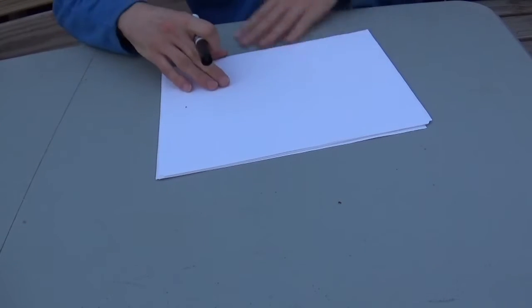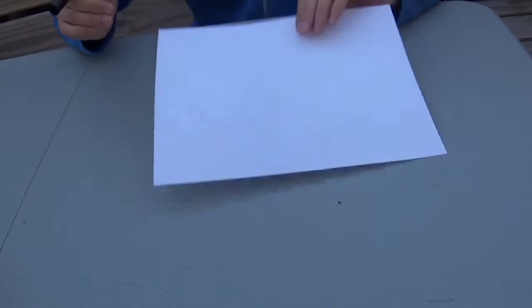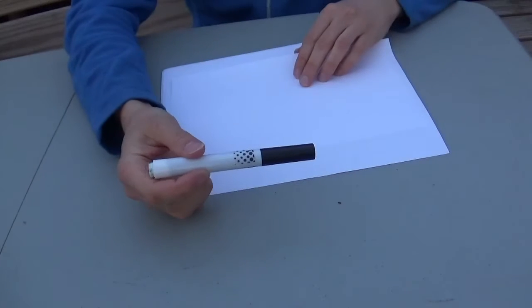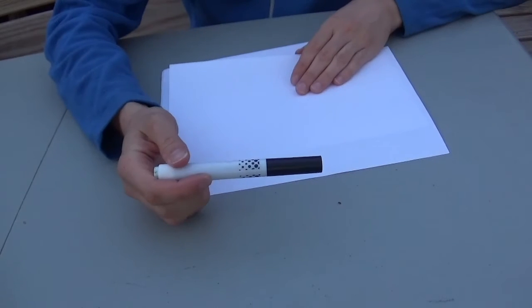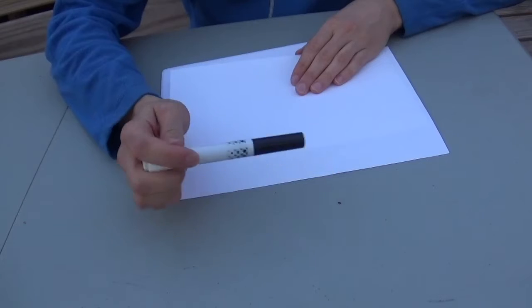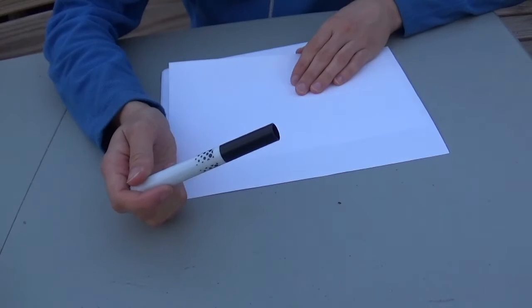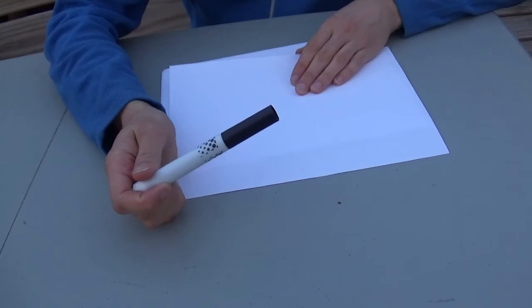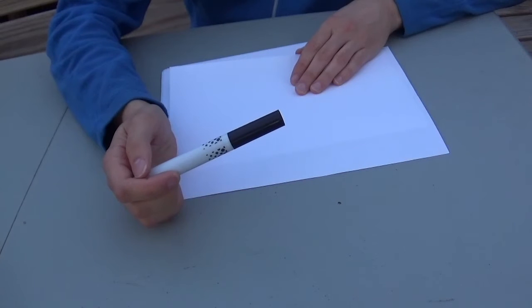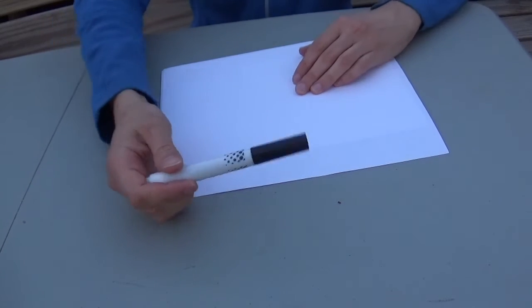To make this art project, we only need two things: a piece of paper and a marker. You can use any color marker, but I'm choosing black with white paper because those are two colors that are very opposite and contrasting, so it will help give the illusion more clearly that the picture is moving without it actually moving.